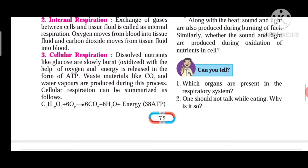What about the energy? 38 ATP molecules of rich energy are produced. Students, one question is asked here: which organs are present in the respiratory system? The respiratory system contains the nose, pharynx, larynx, trachea or windpipe, and lungs containing alveoli.